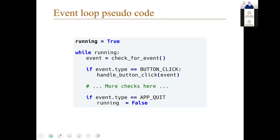Here is pseudocode for an event loop. There is a flag called 'running' that determines whether to continue. In the while loop, if running, we check for an event. If the event type is a button click, we handle it. If the application receives a quit event, we set running to false and the loop terminates. Most of this is hidden inside Qt and other UI libraries — you never see the loop itself.